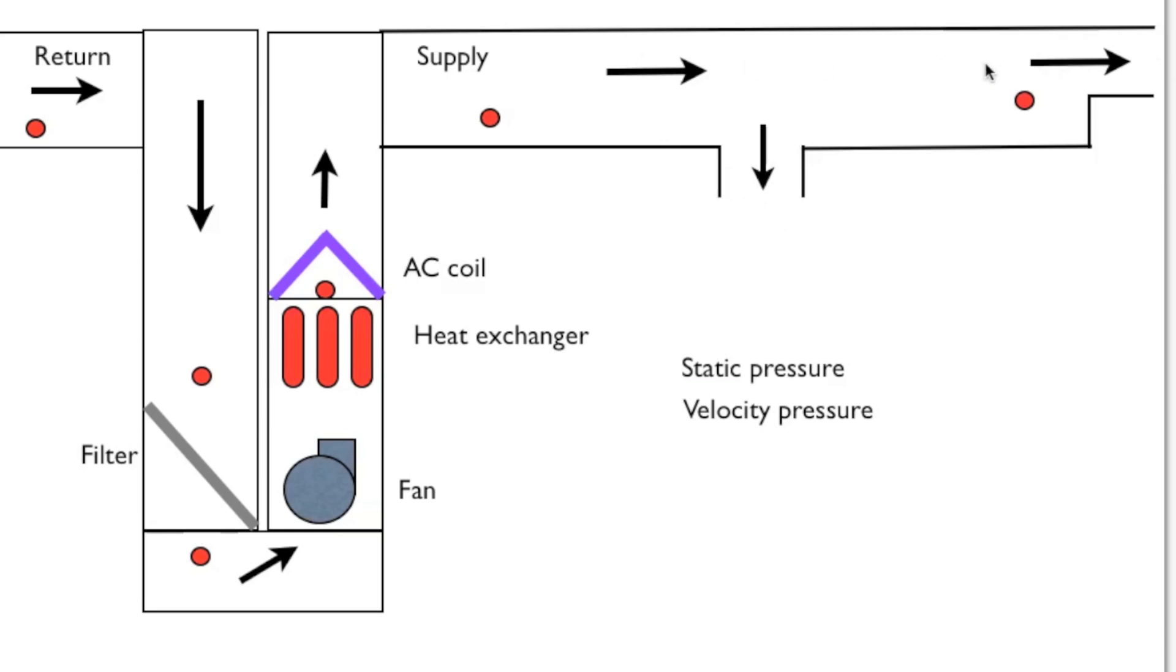This other one here that's on the end of the duct actually moves more air because the air is moving down the duct. The static pressure is going to push it out of here, but also the inertia or velocity pressure of the air is going to move it out.